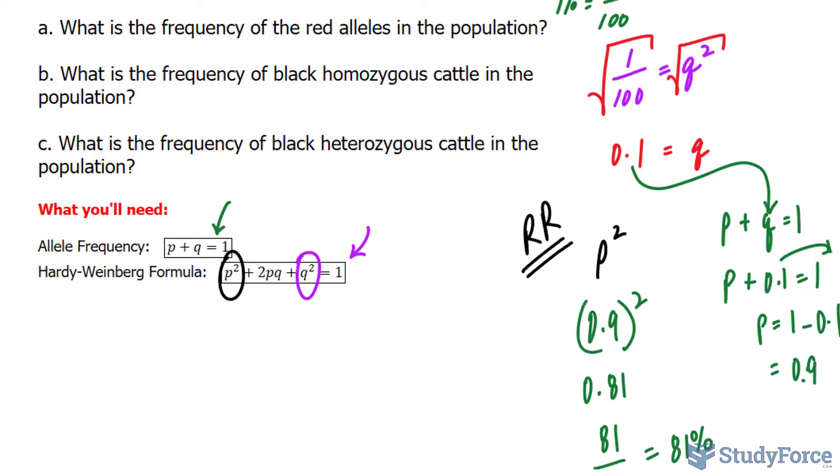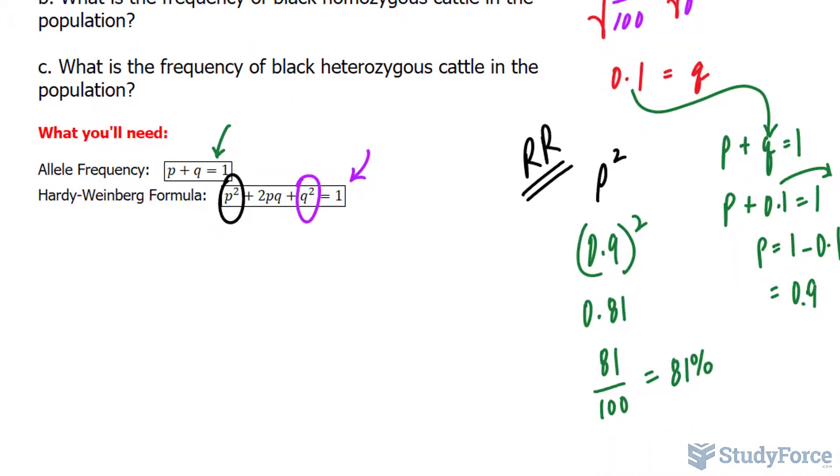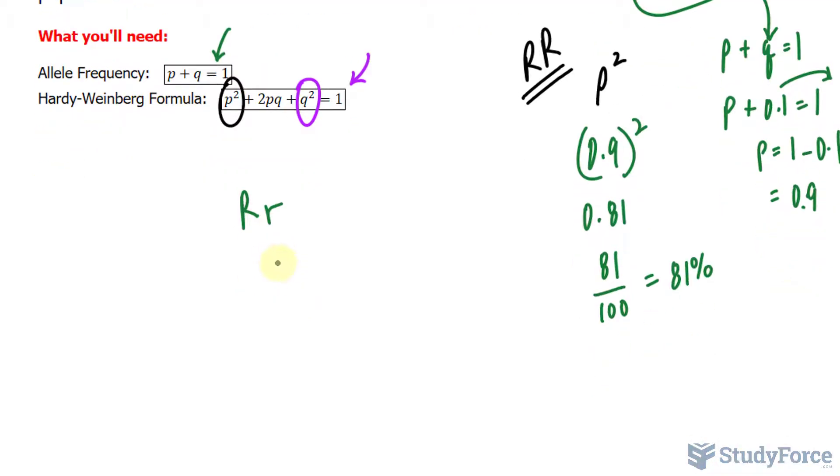And for question C, what is the frequency of black heterozygous cattle? So these are cattle that are carriers. They have the genotype R, little r. They're carriers, they don't show the red spots. But if they were to mate with another cattle that was also a carrier, there's a chance that their offspring will have red spots. So we have to use this term of the Hardy-Weinberg formula, 2 times p times q.